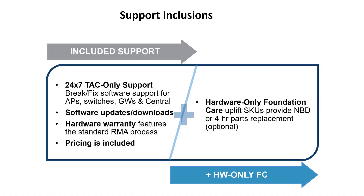A Central license also includes 24/7 software support for both Central and the devices themselves. It also includes access to firmware updates and the ability to log hardware warranty tickets. You can uplift the default hardware warranty SLA by using the hardware-only foundation care support SKUs, which are a lot more cost-effective than the traditional combined hardware and software support SKUs.